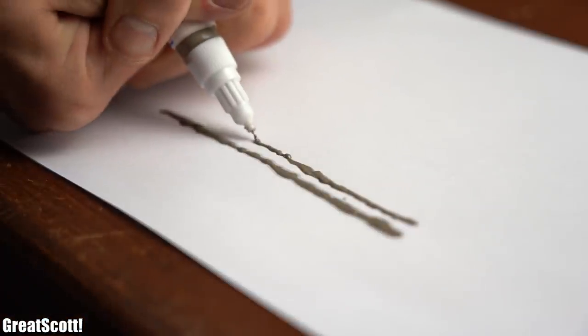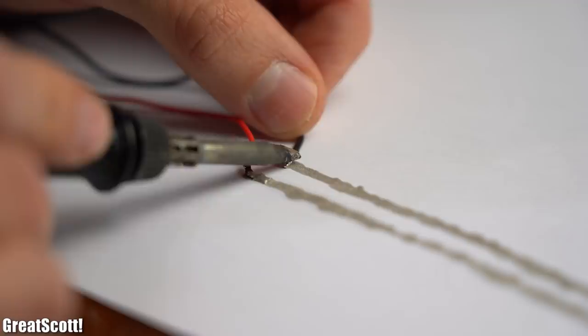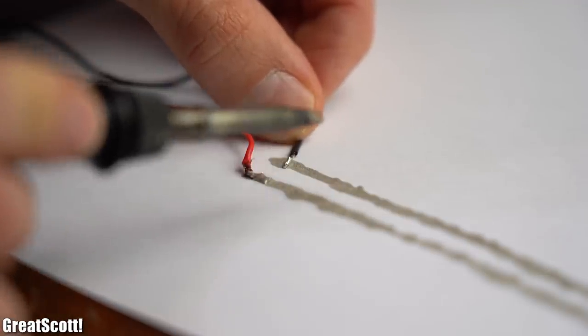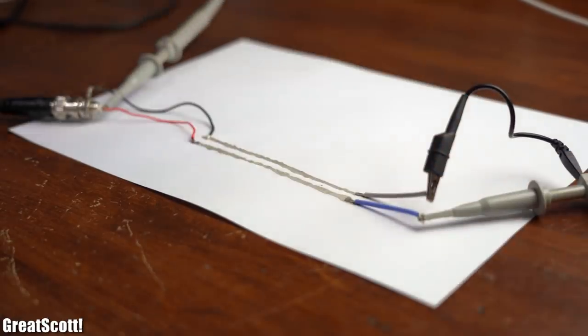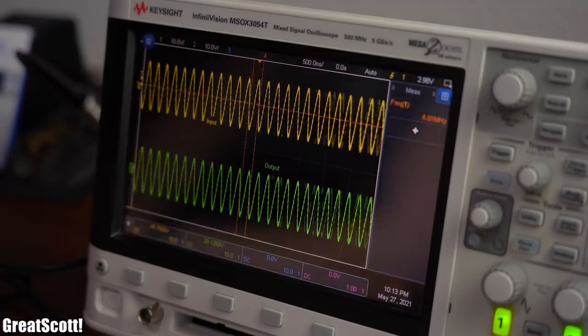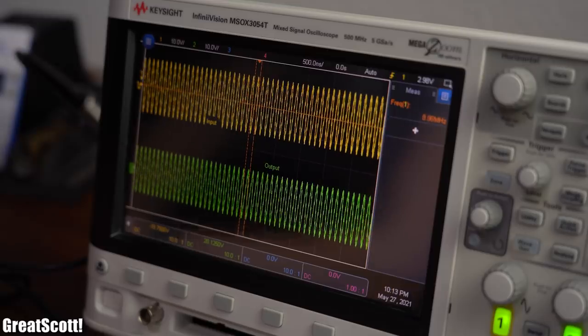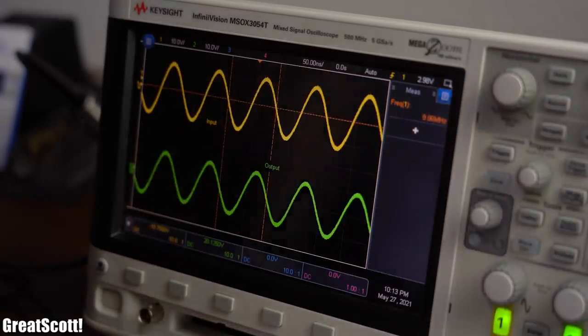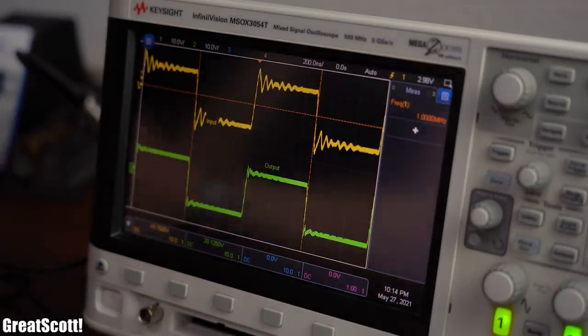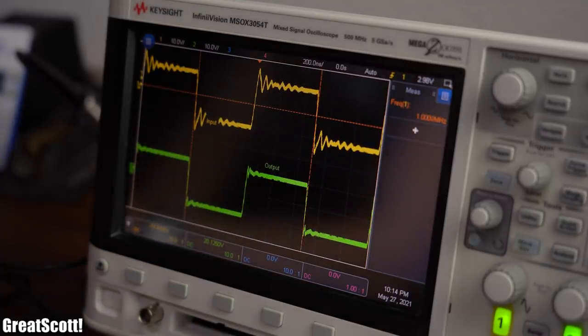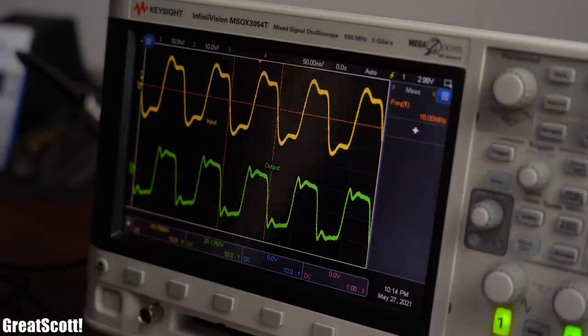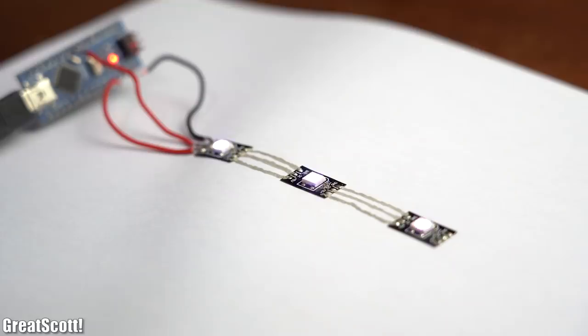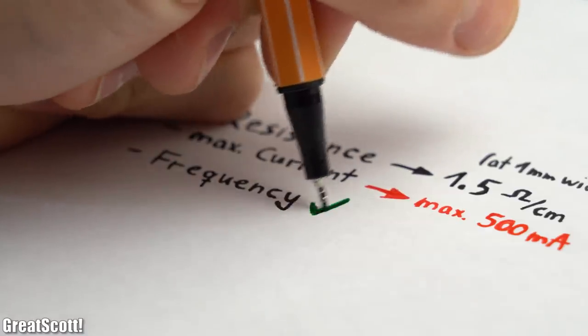So I drew two long inclines and hooked my function generator up to them on one side while I had a look at the frequency with my oscilloscope on the input and output side. And as you can see with the sine voltage test the frequency does not alter the waveform at all on the output. But while using a square wave it seems like the waveform was a bit damped at higher frequencies which is completely normal though. That means data communication should not be a problem at all with this ink and thus the frequency test was passed.